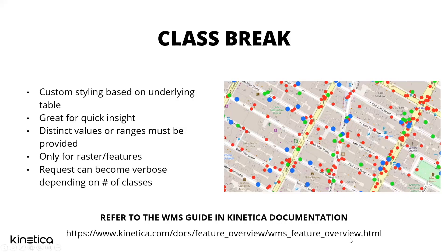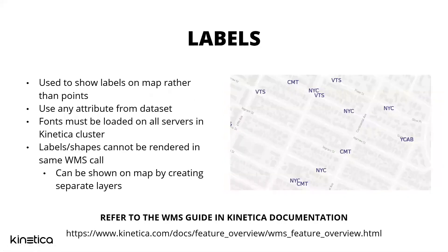You don't need to remember the URL — just Google 'Kinetica WMS' and it's the first result. Labels are something I didn't show in the demo, but if you're rendering a lot of shapes it makes sense to have labels on top, especially if the label data is in the same dataset. For example, with a states layer you could show state names. The important thing to remember is that labels are a separate layer — you cannot render labels and geospatial data in the same layer. You overlay the label layer on top of your shape layer, and fonts must be loaded on all servers in the Kinetica cluster.